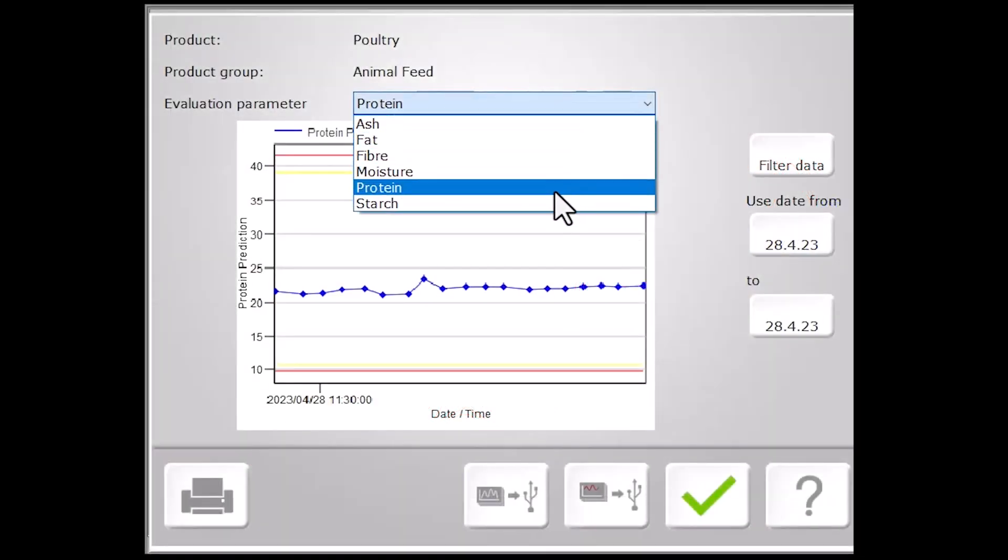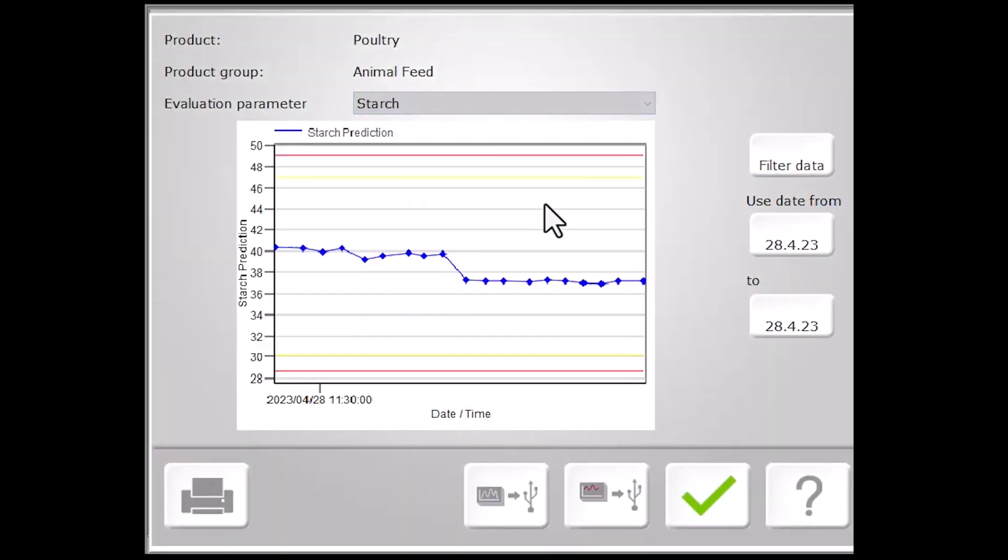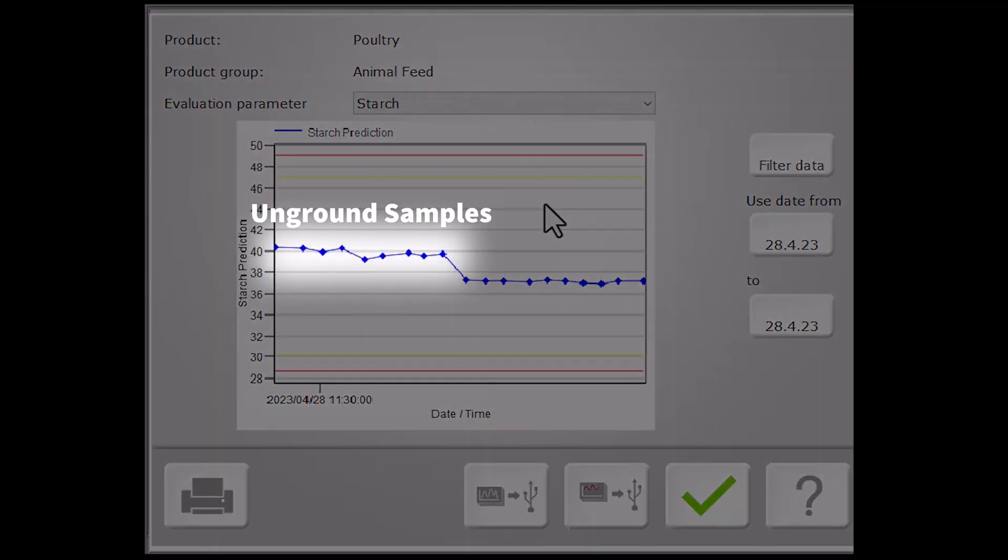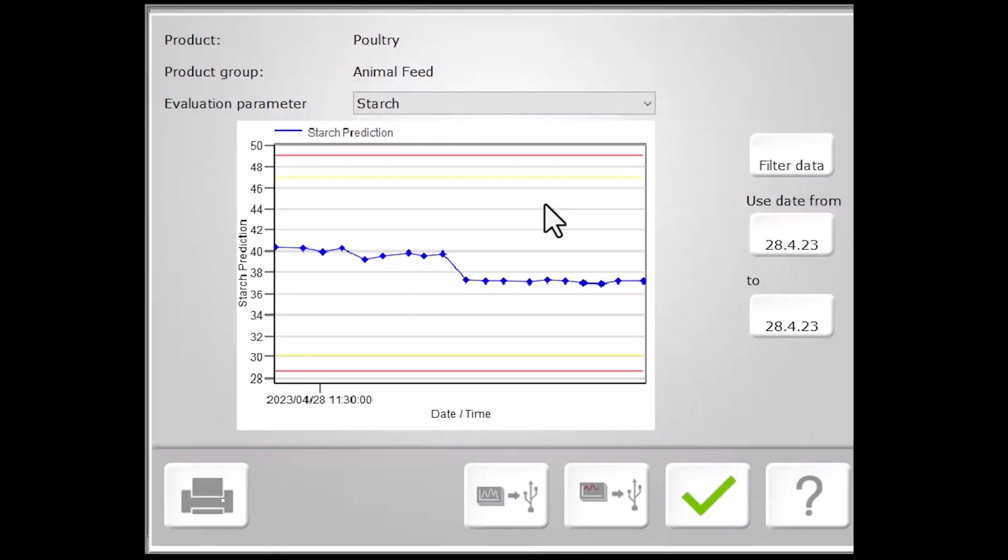This difference is particularly noticeable with a difficult constituent like starch, which is often highly variable in unground samples. These visual indicators mirror the errors that we see when creating models for these constituents, thereby allowing us to better understand our data set and establish appropriate expectations.